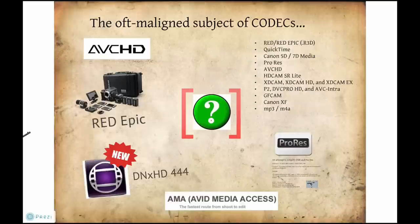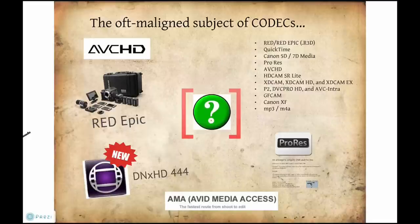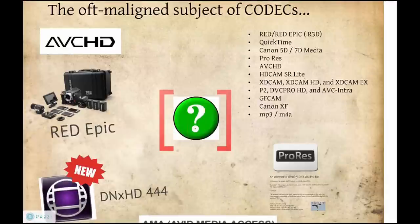AVCHD is getting to be a pretty popular consumer and prosumer HD codec. It's very compressed and requires a very hefty system to use, but now you don't need to transcode it — you can use it natively inside Media Composer. We also have support for the Red Epic, and the new DNxHD 444 codec, which allows 4:4:4 color space RGB instead of what we were limited to before, which is 4:2:2. This is not an alpha channel, so do not be confused. That brings our whole list of codecs to a staggering amount.